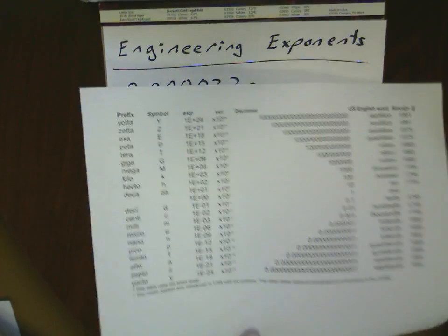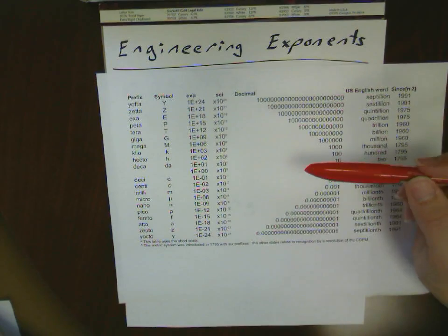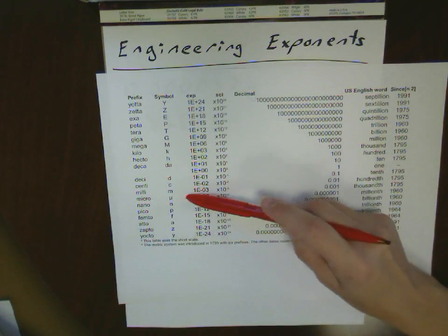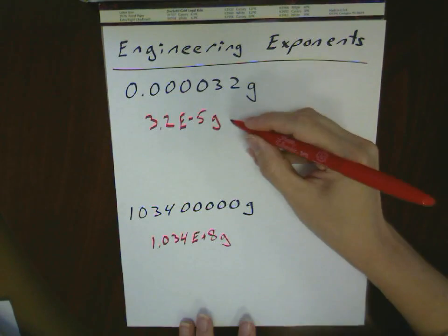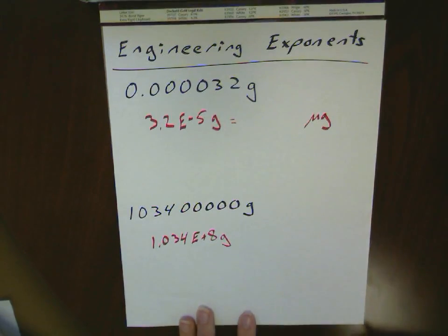If we take a look at our chart for our metric prefixes, for our first one, we had a minus 5. Minus 5 is not one of our defined metric prefixes. Minus 6 is, though, and that's going to be the closest one there, and that's micro. So what we're trying to do is, ultimately, we want to put this into a unit of micrograms.